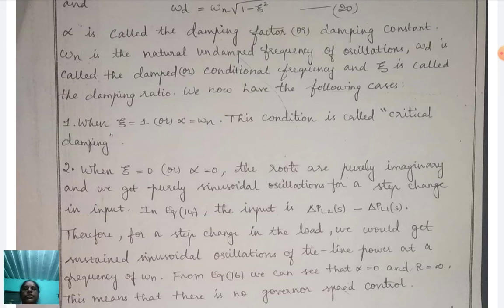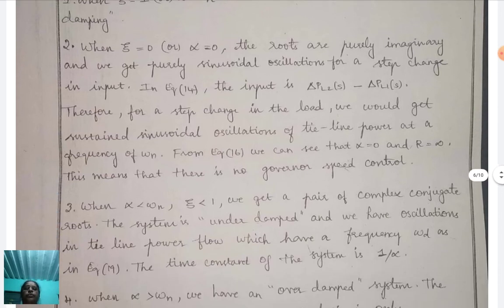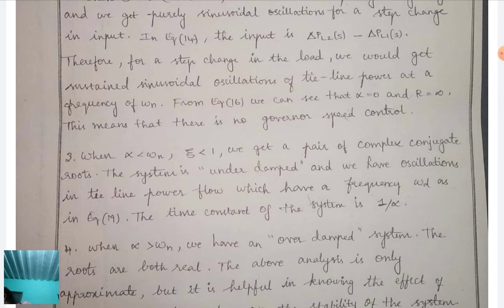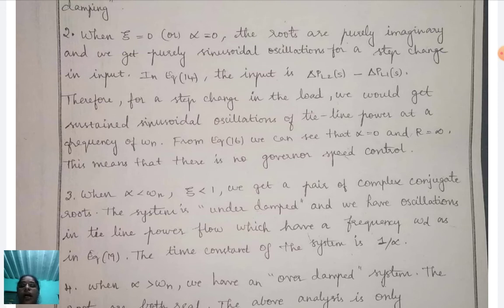Under critical damping, when ζ = 1 or α = ω_N, the system is critically damped. The second case is when ζ = 0 or α = 0: the roots are purely imaginary and we get purely sinusoidal oscillation for a step change in input.